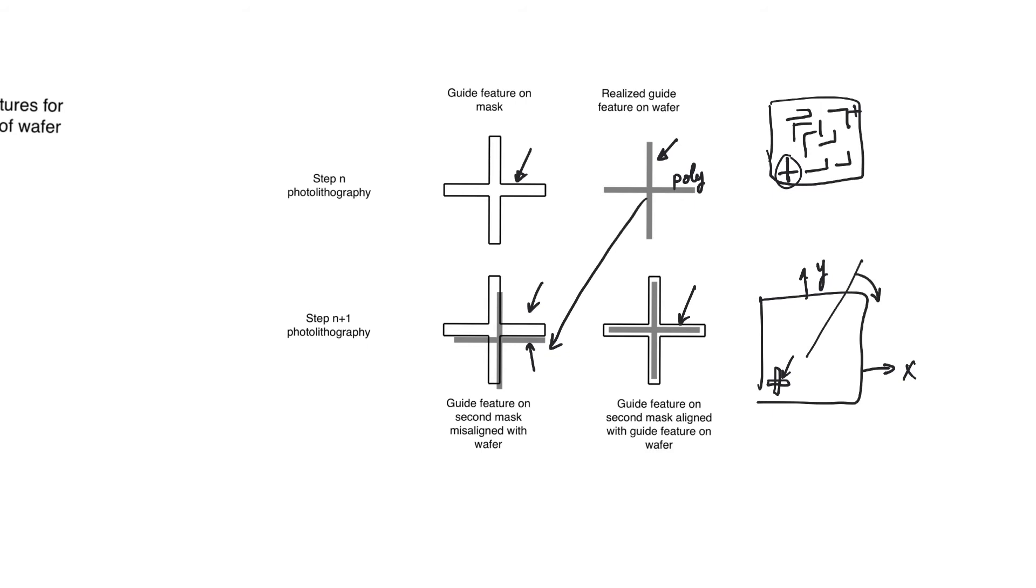A cross is a feature that guarantees that we have aligned in the y direction, in the x direction, and in the rotation direction.